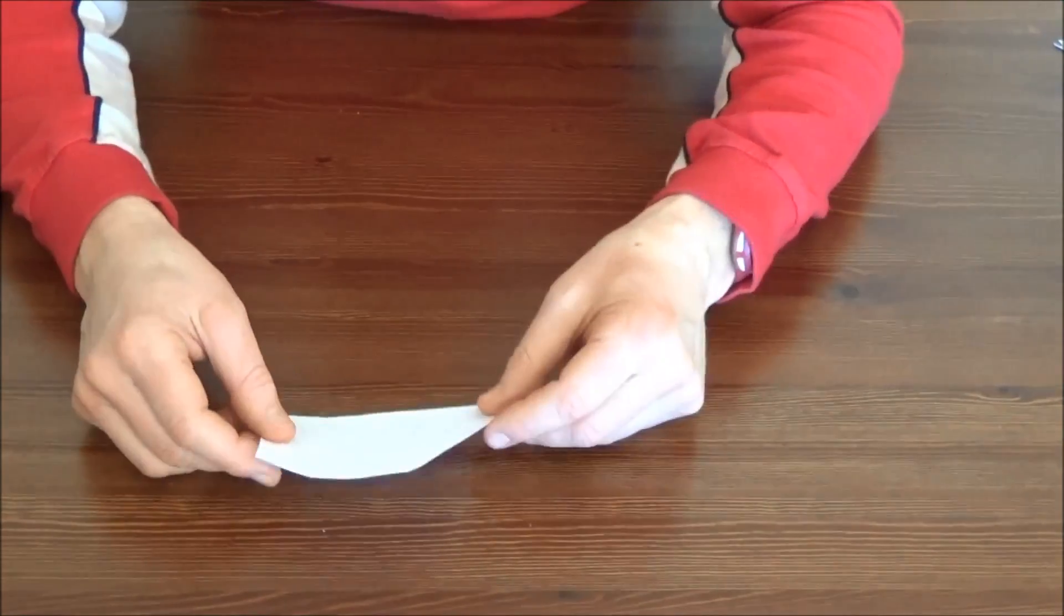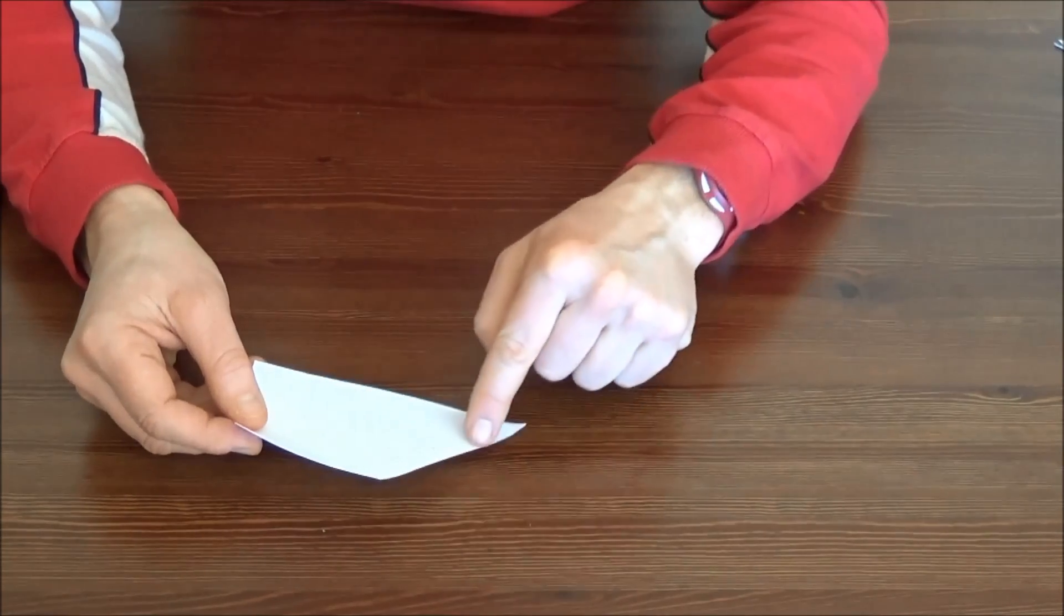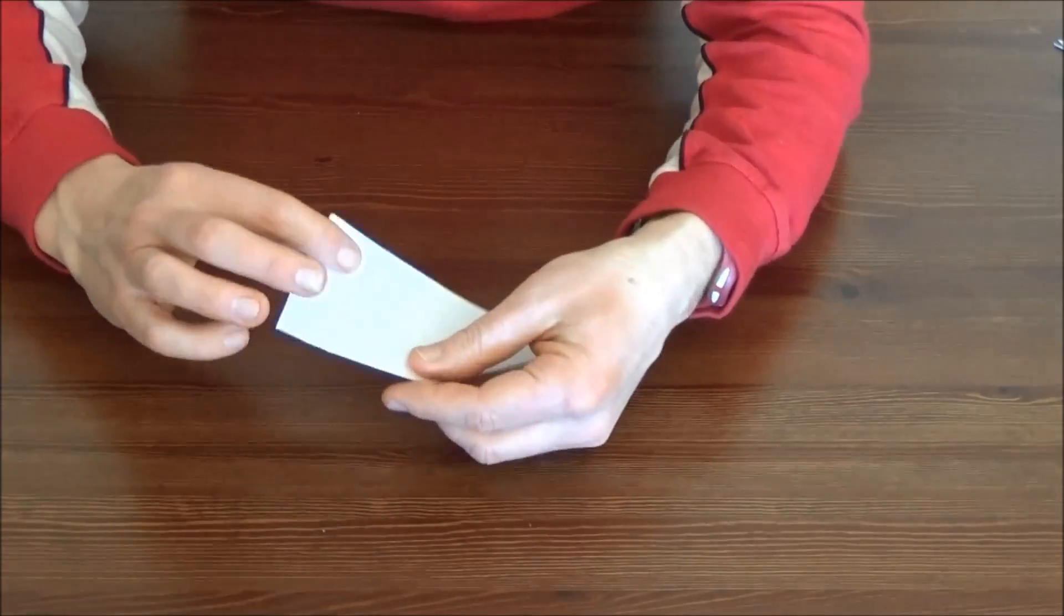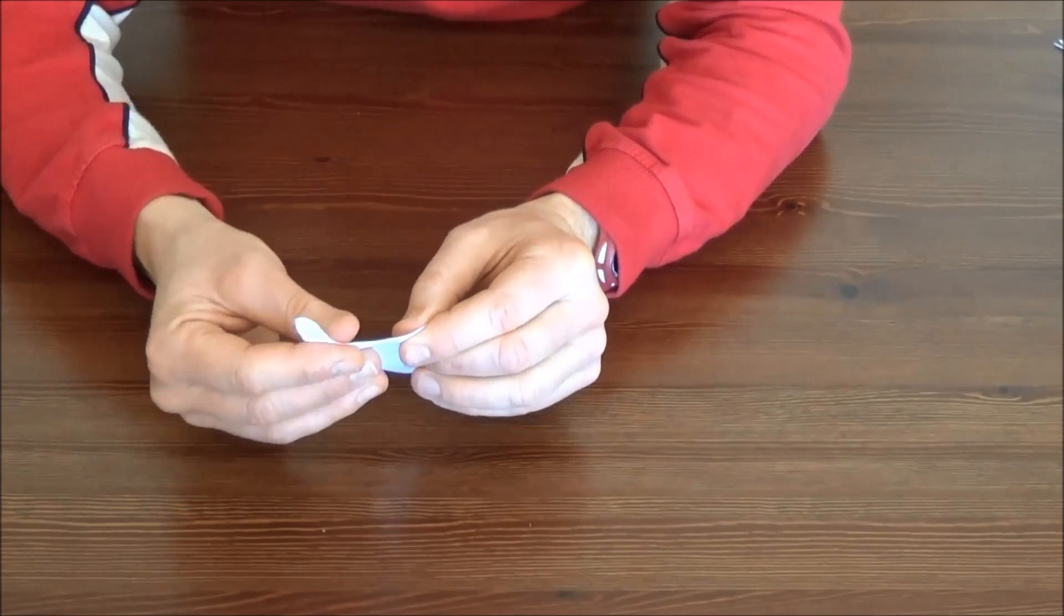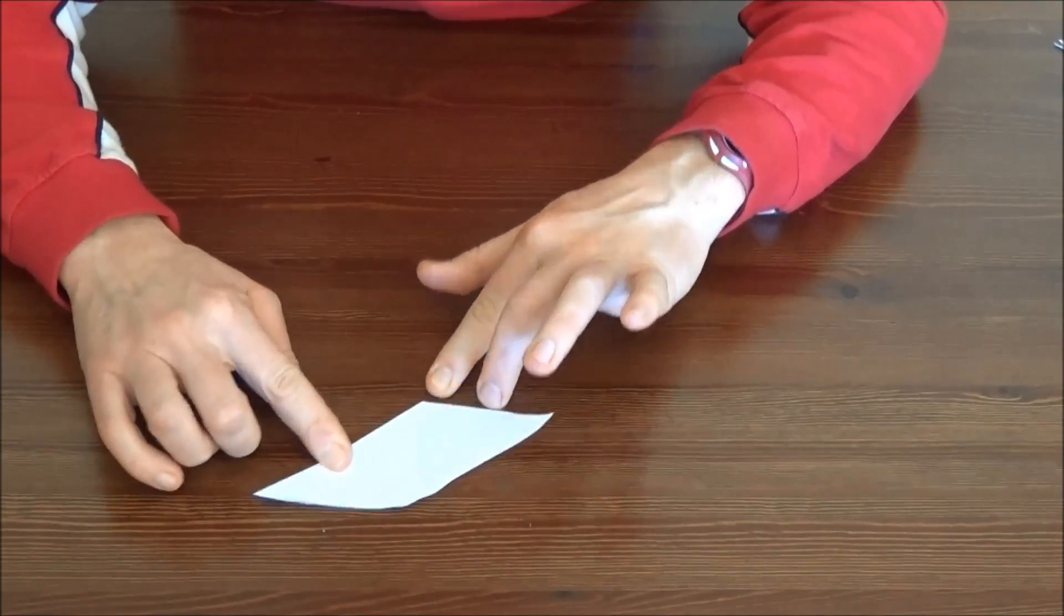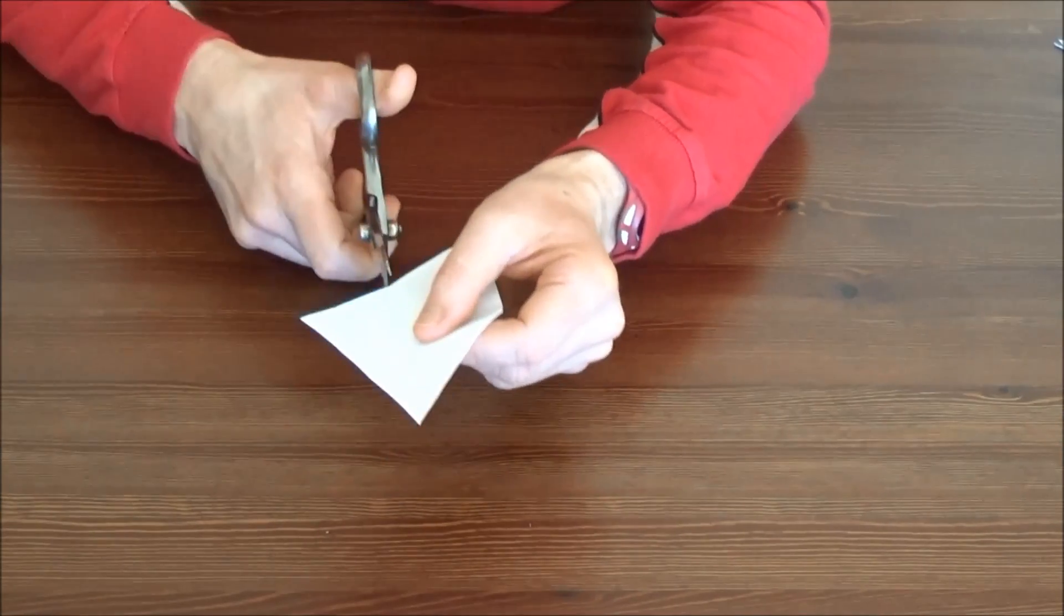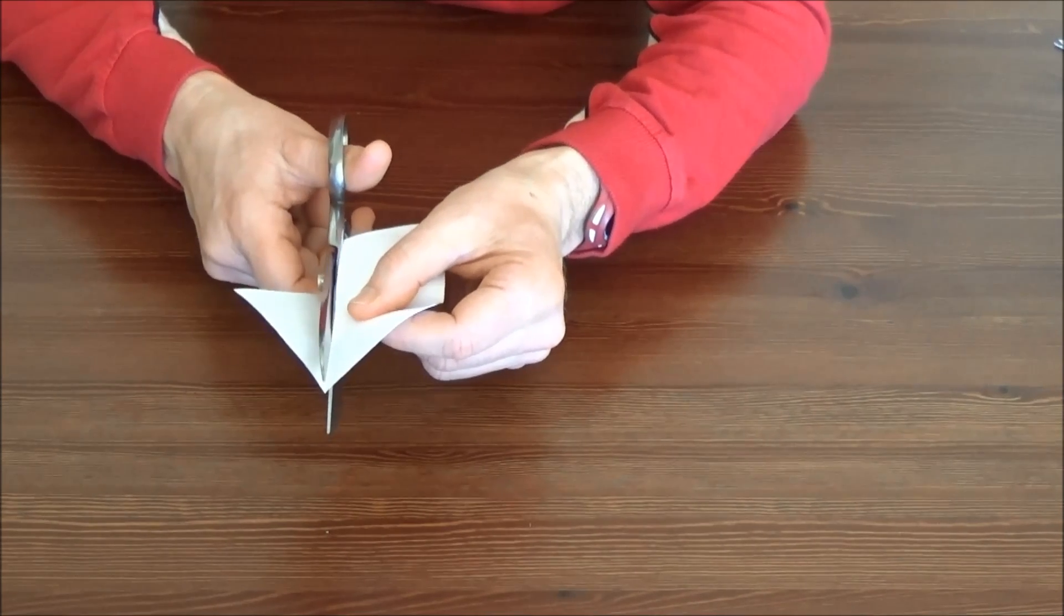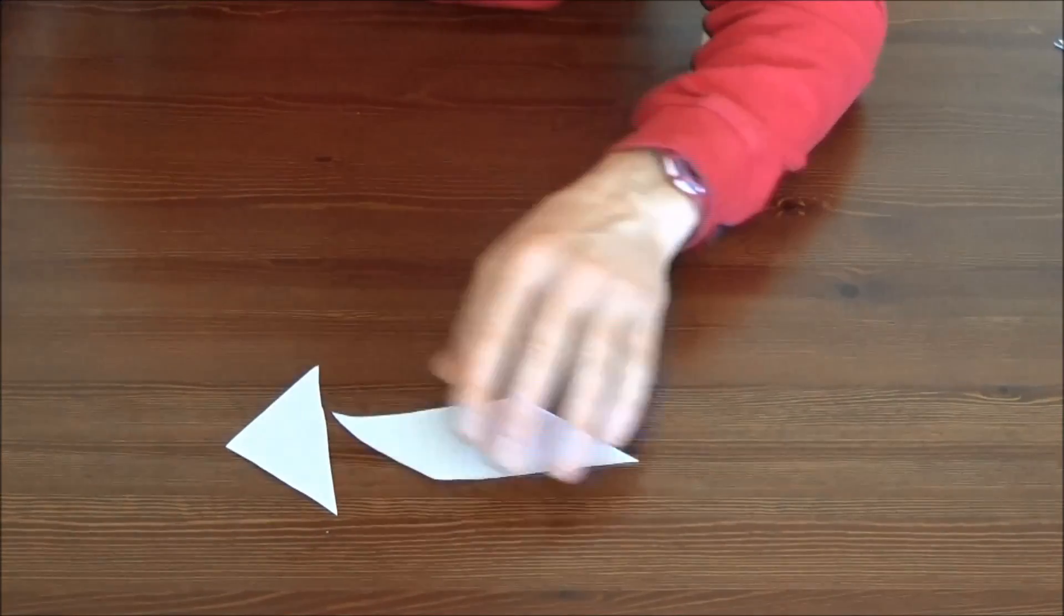Take the small trapezoid and fold it so that the vertex of the obtuse angle meets the opposite right angle, like so. Then cut along the crease. You have created a parallelogram and a small triangle.